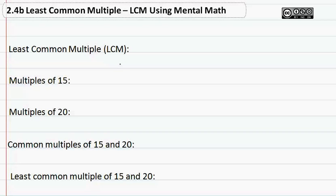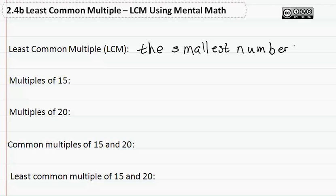Least common multiple, 2.4b, LCM using mental math. The smallest number that is a common multiple of a group.